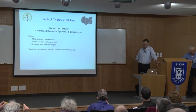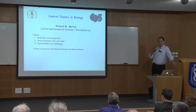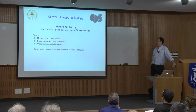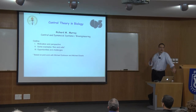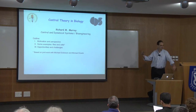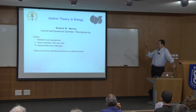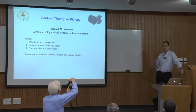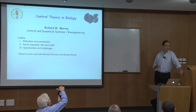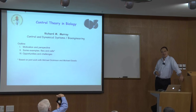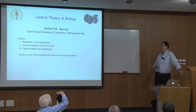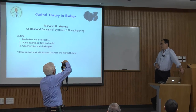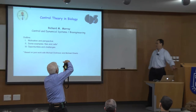I want to say a little bit in this introductory talk about some ideas about control theory and biology. Both are incredibly broad subjects, and it's impossible to represent all the different combinations. I'll start with some motivation about how I got interested in these problems, then pick two examples: one about flies or insects more generally, and one about cells and control theory at the molecular level. I'll end with some opportunities and challenges.